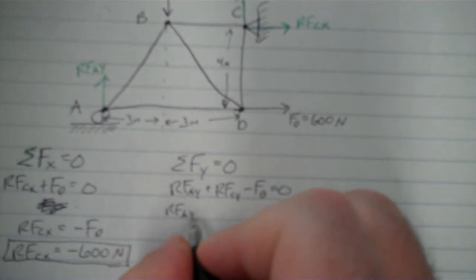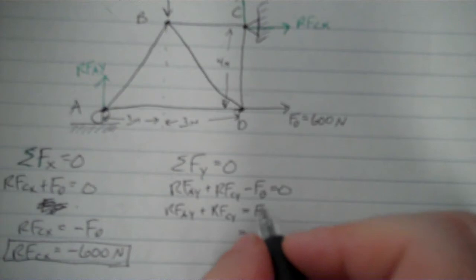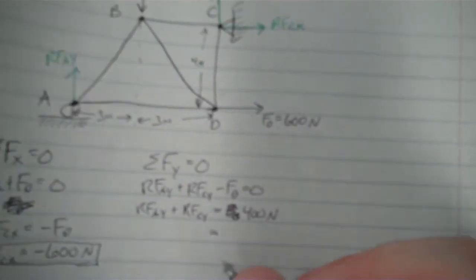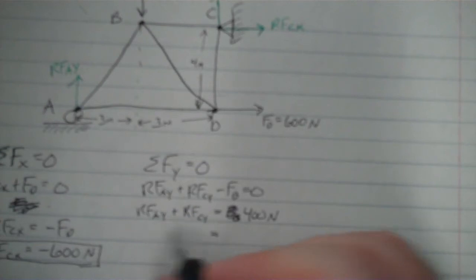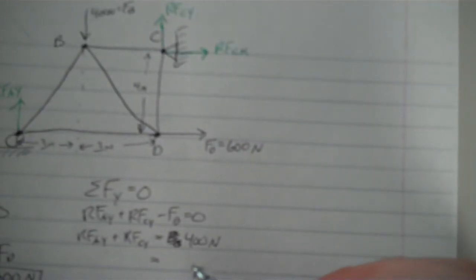Now I'm just going to move that over to the other side. RFCY equals FB. Now FB is equal to, I'm just going to put it over here, 400 newtons. I probably should have done this in pen, but oh well. Now I'm committed. All right, so that's the sum of the forces here. I can't do anything with this because I have two unknowns, RFAY and RFCY. I don't know what those are, so I can't do anything with it yet.